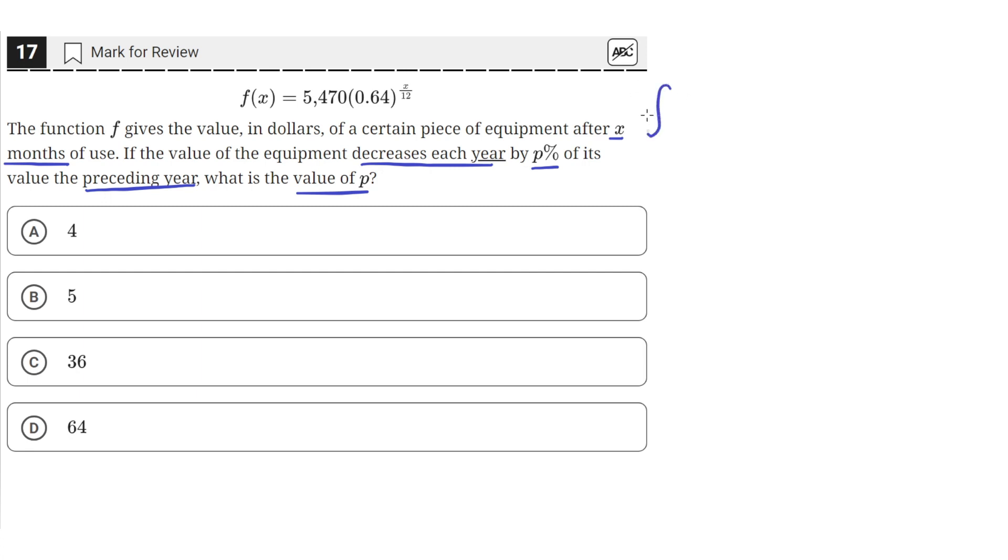So first let's find f of 0, the value in the beginning, or month 0. So we can do that by just plugging in a value of 0 for x.